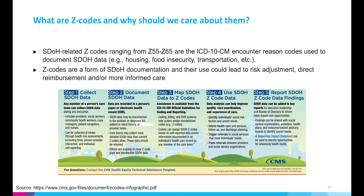When referring to social determinants of health documentation, Z codes are most often referenced. Z codes ranging from Z55 to Z65 are the ICD-10 encounter reason codes used to document social determinants of health data. Z codes are a form of SDOH documentation and their use could lead to risk adjustment, direct reimbursement, and more informed clinical care.